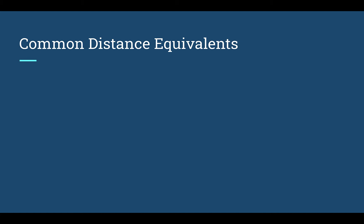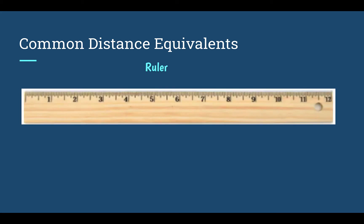In order to do this, I need to know some common distance equivalents. A standard ruler is one foot long. In that foot there are inches — the numbers on the ruler are actually inches. Inches can be at the beginning, in the middle, or at the end. The whole foot is equal to 12 inches.